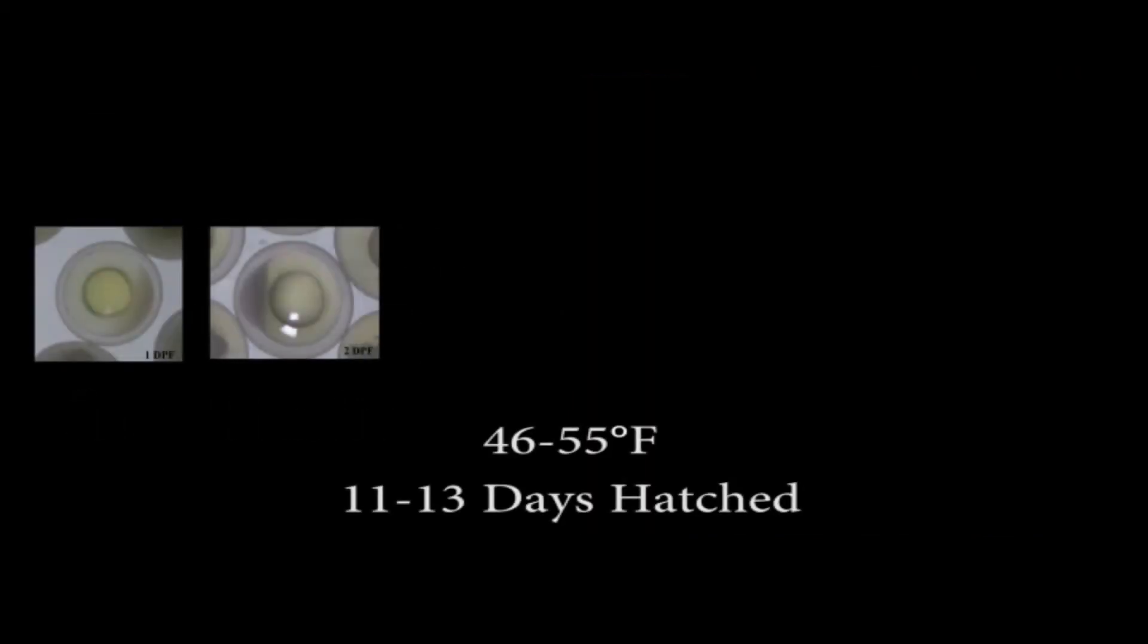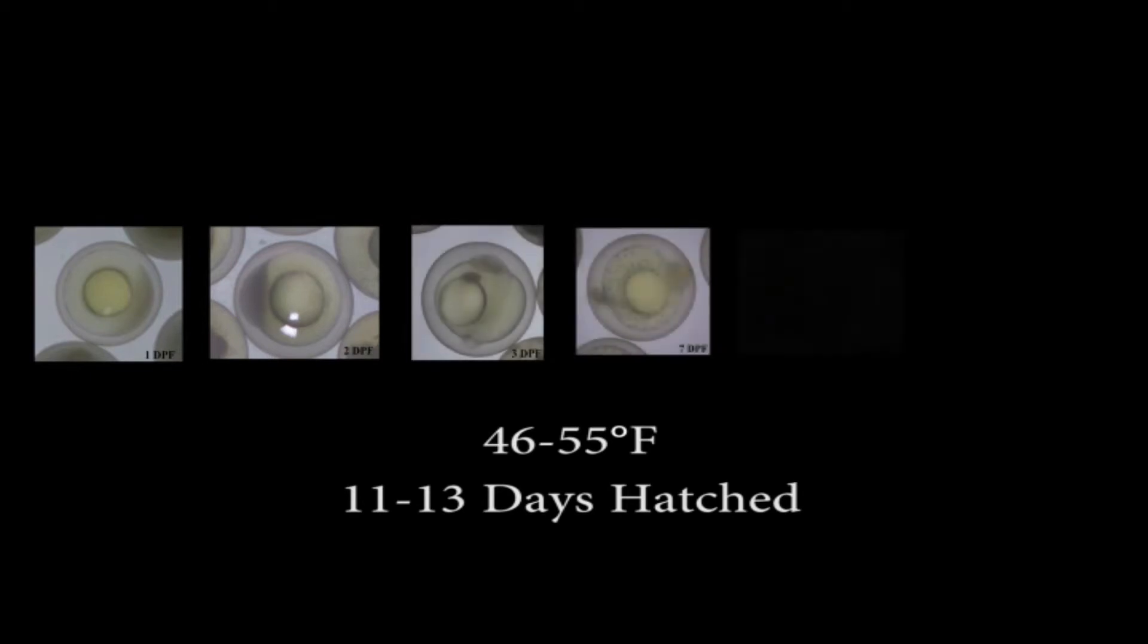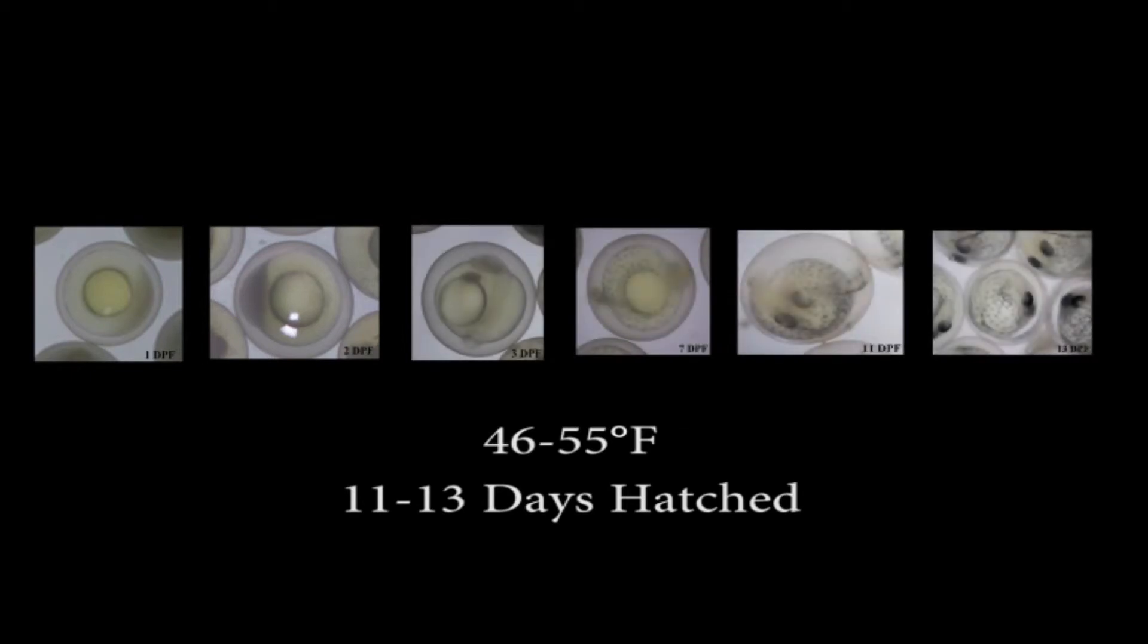There are various stages of a developing walleye embryo. The eggs shown here were incubated at temperatures beginning at 46 degrees and slowly rising to 55 degrees Fahrenheit, hatching out eggs in 11 to 13 days.